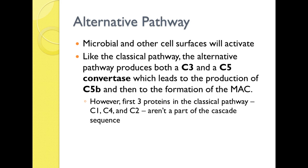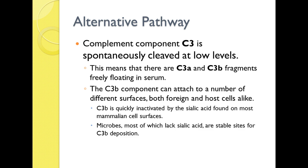The next one is the alternative pathway. Microbial and other cell surfaces activate this. Like the classical pathway, the alternative pathway produces a C3 and C5 convertase which leads to the production of the MAC attack — the MAC attack is the same at the end. However, the first three proteins — C1, 4, and 2 — are not part of the cascade sequence as they are in the classical pathway. Complement component C3 is spontaneously cleaved at low levels, meaning C3a and C3b fragments are freely floating in the serum. C3b can attach to a number of different surfaces, both foreign and host cells. C3b is quickly inactivated by sialic acid found on mammalian cell surfaces — so the body doesn't coat its own cells. Microbes which lack sialic acid are very stable sites for C3b, making them extra tasty for phagocytosis.